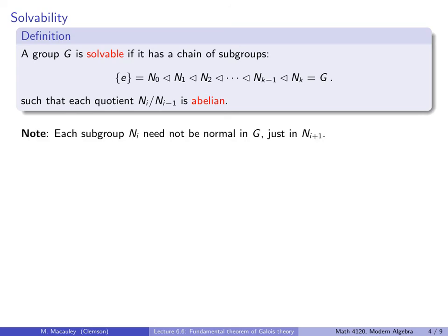It is important to understand that each subgroup N_i need not be normal in the entire group — it just has to be normal in the next subgroup.